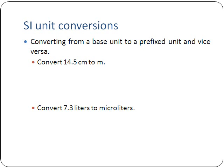I'm going to suggest that you use a particular way of writing these out for conversions — using a type of table. The way you start off with these is by simply writing out the number you start with. So in this case, 14.5 centimeters. We say 14.5 cm like this. And this is how you're going to start.